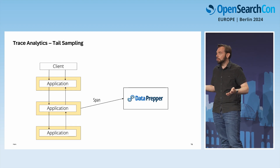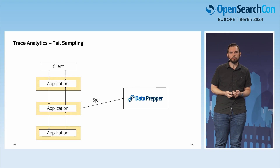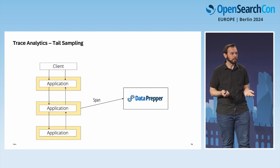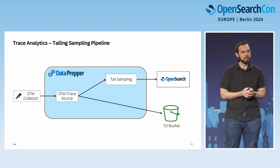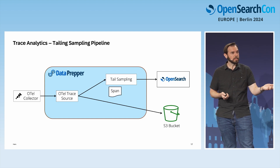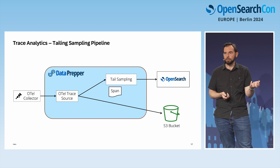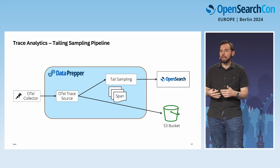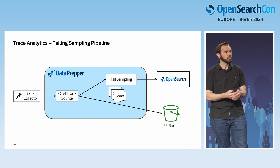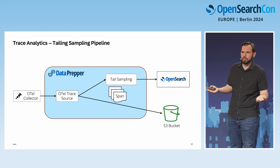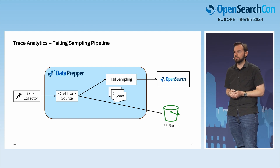To depict how tail sampling works: one application sends one span, they can come in any order from a distributed system, and DataPrepper collects them over time. Once we have all the spans, we have enough information to make a decision on the overall trace. Was it a success? If so, maybe we sample it — say, only keep 20% of successful responses. With routing capabilities, you can also send everything to S3 so you have a complete record if you ever need to look it up.